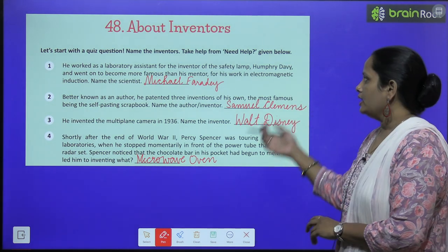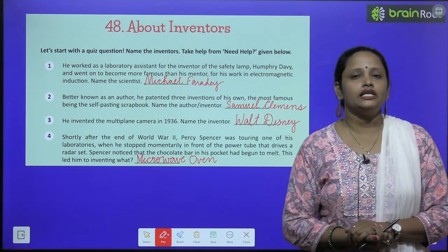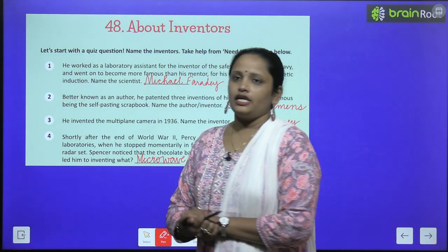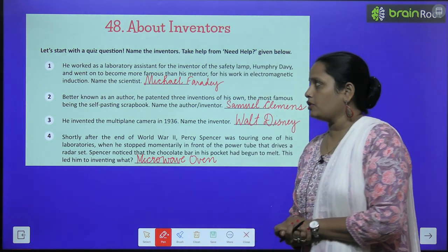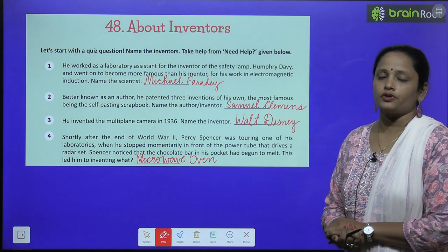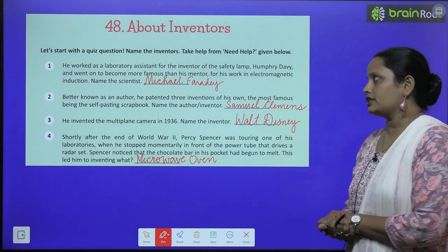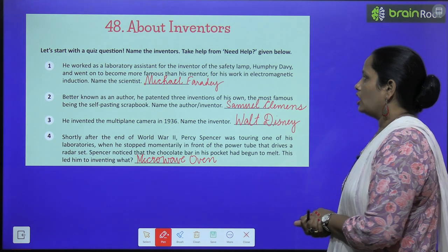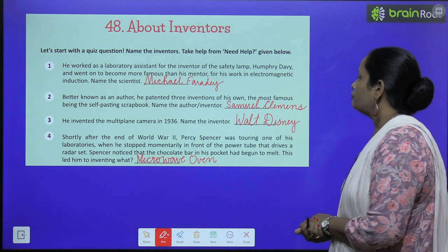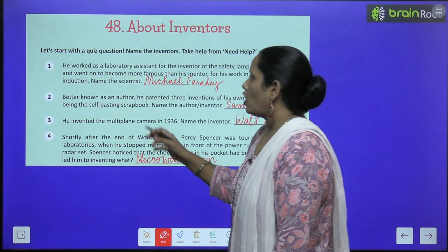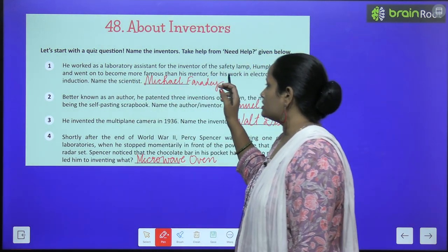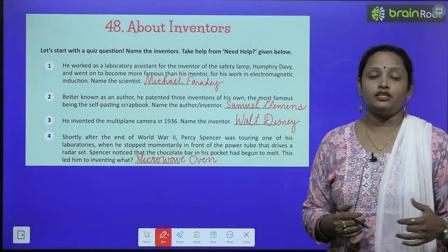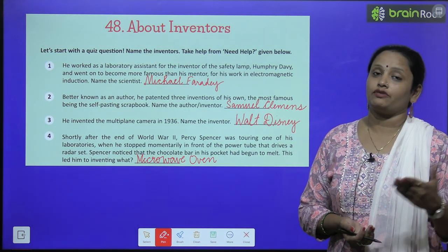Inventors के नाम बताने हैं और need help box से help लेनी है। So the first one: he worked as a laboratory assistant. यह person एक laboratory assistant के रूप में काम किया था for the inventor of a safety lamp, Humphrey Davy, and went on to become more famous than his mentor. इन्होंने इन चीज़ों का आविष्कार किया और अपने mentor — अपने guru — से भी ज़्यादा famous हो गए।